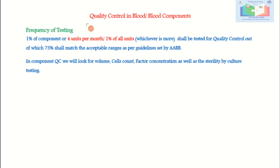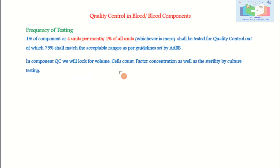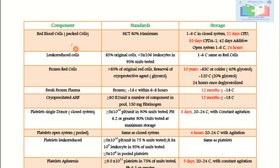Quality control of blood components: the frequency of testing is 1% of components or four units per month, or 1% of all units — whichever is more. Out of these, 75% shall match the acceptable ranges as per guidelines set by the American Association of Blood and Biotherapies (AABB). In component QC we look at volume, clotting factor concentrates, and sterility by culture testing.